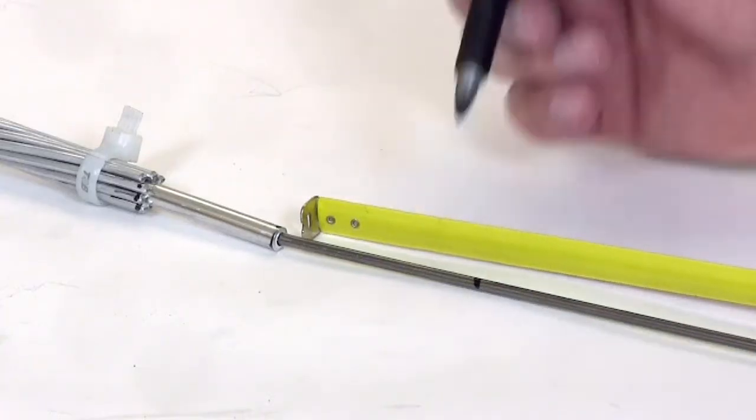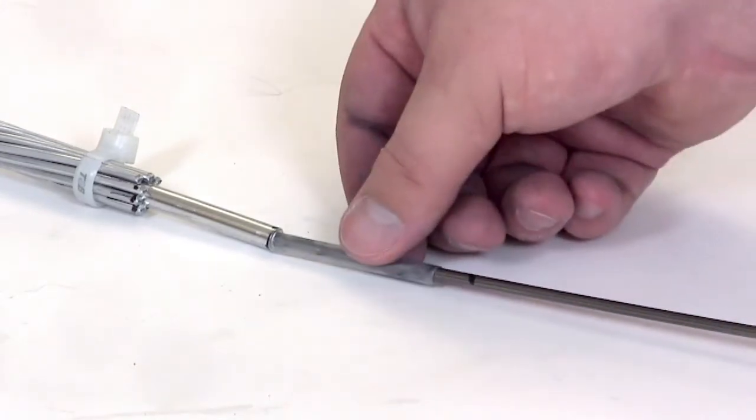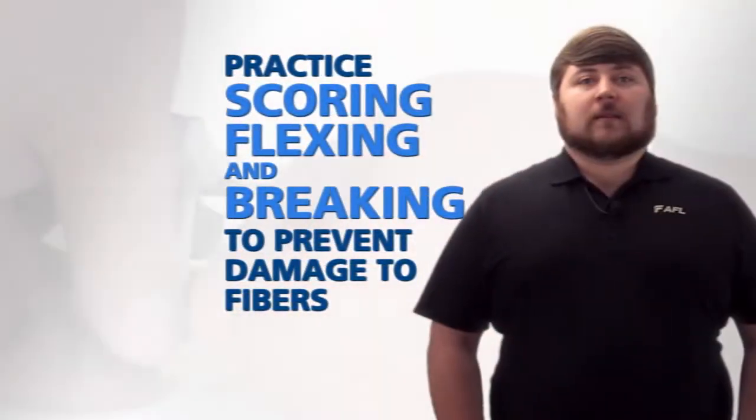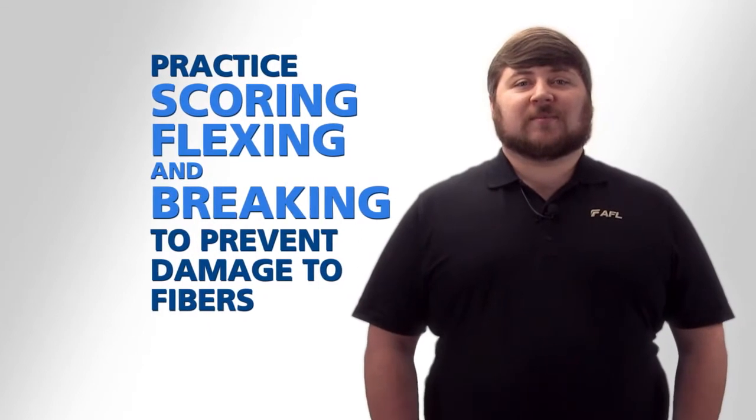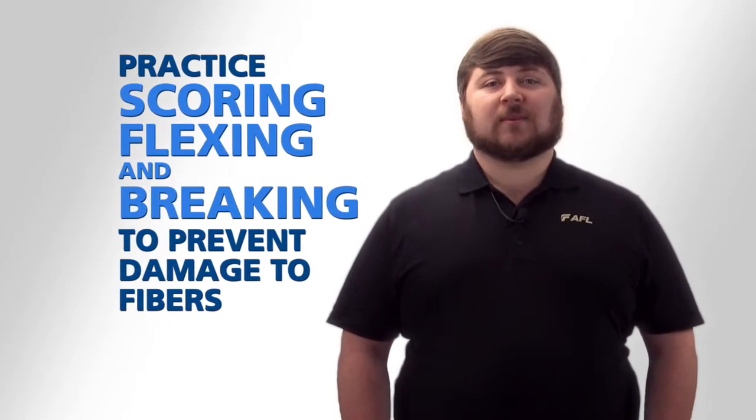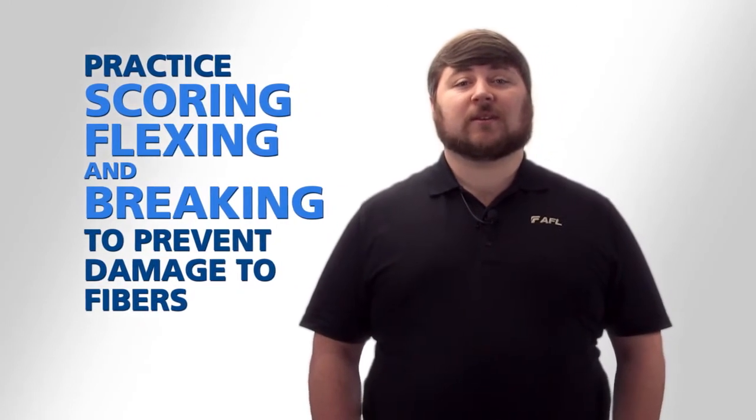Once inside the pipe, mark the stainless steel tube. Place the shrink tubing from the AFL frication kit and cut the stainless steel tube. There are two things to note here. First, practice scoring, flexing, and breaking a stainless steel tube with a piece of scrap cable. Practicing this procedure helps ensure that optical fibers are not damaged during the tube removal.